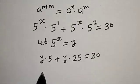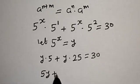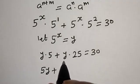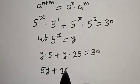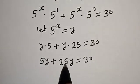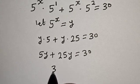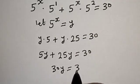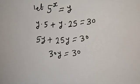This gives us 5 times y, which is 5y, plus 25 times y, which is 25y, is equal to 30. So 5y plus 25y gives us 30y, which is equal to 30.